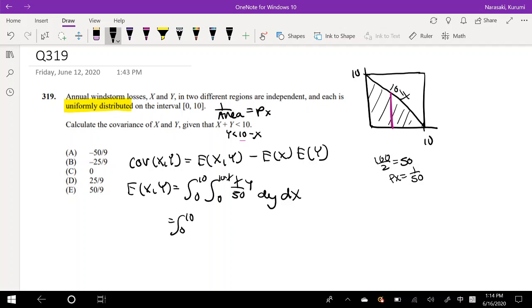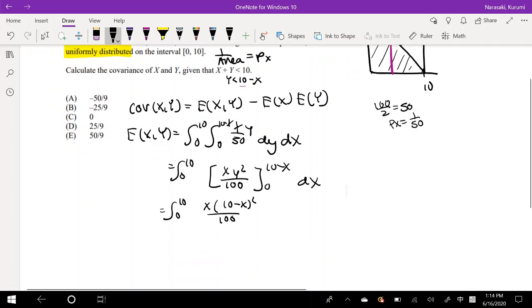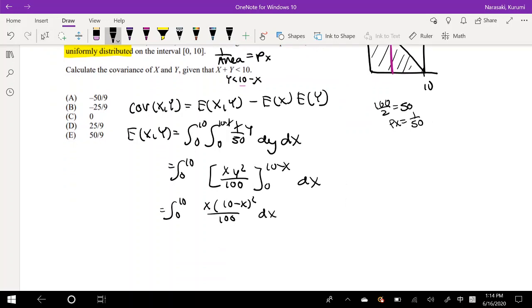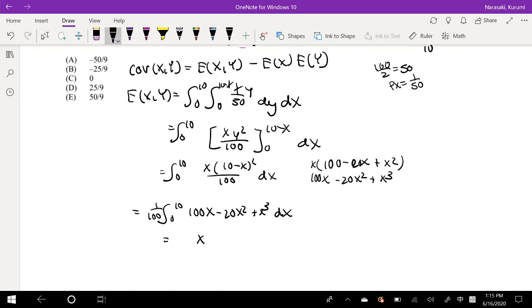We love the integrals, don't we? So in terms of y, it's going to be y squared x over 50 times 2, which is 100, evaluated from 0 to 10 minus x, dx. This is equal to 0 to 10. So plugging that in for y, then this is equal to... Actually, I'm going to solve this numerator out. So that's going to be equal to 100 minus 20x plus x squared times x. So this numerator is going to be 100x minus 20x squared plus x cubed. Okay, now let's just integrate this sucker out.